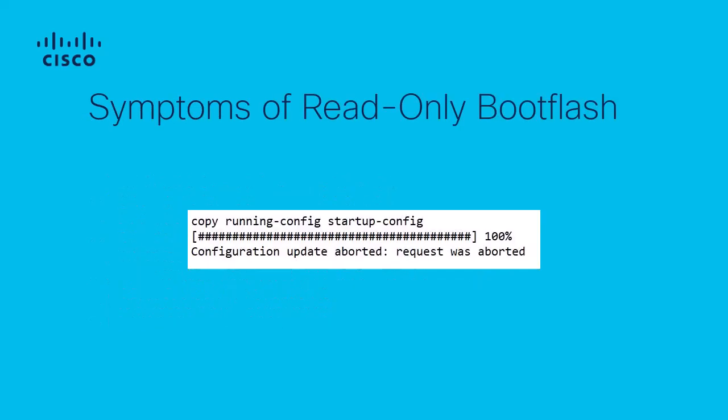The symptoms will typically present themselves during a routine checkup or change, or when copying files. The engineer will try to save the configuration and realize that they are unable to do so. The copy running-config startup-config command will return a failure. Even after waiting and returning later on, the customer may still be unable to save the configuration. As a result of the read-only state, the switch may also generate other syslogs, which we will cover later in the video.